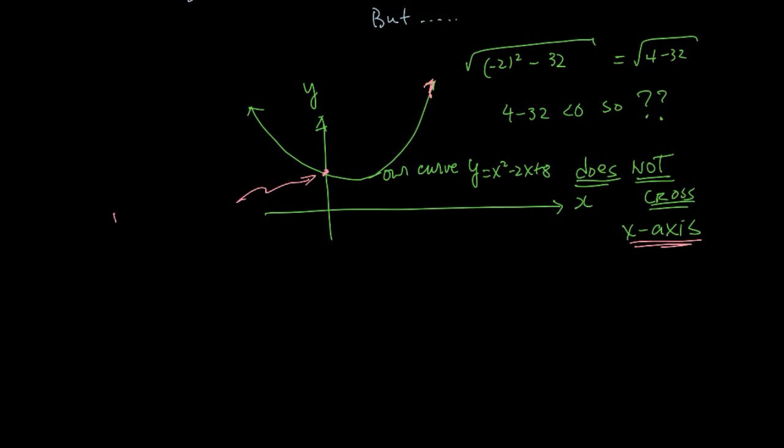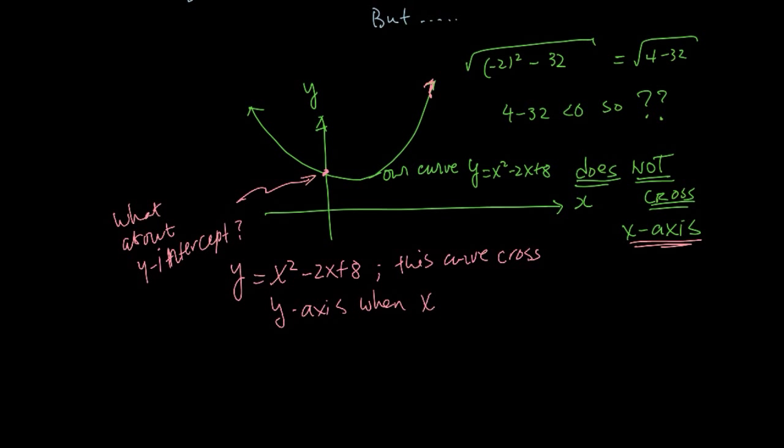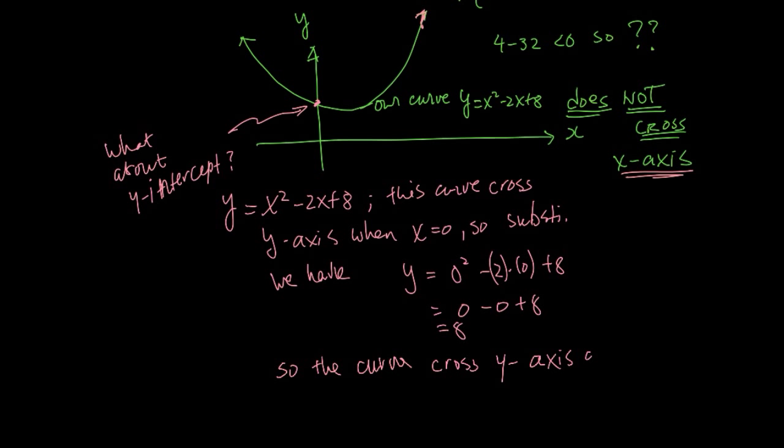For those of you out there who want to know, what about the y-intercept? Since we know there's no x-intercept, maybe I can find at least one interesting point on this curve. Notice every point on the y-axis has an x coordinate of 0. To get a bonus point, in order to find my y-intercept, all I have to do is substitute x equals 0 into this equation, and I see that y equals 8. So the curve crosses the y-axis at x equals 0, y equals 8.